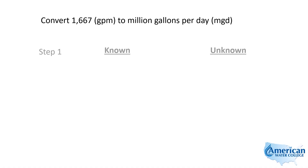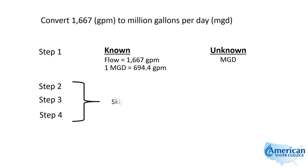There's another way to do this same problem that I'll show you. We have the same information, but I'm going to give you another equivalent: 1 MGD is equivalent to 694.4 gallons per minute. This is not given on any equivalent sheet for most state licensing exams, so you'll want to remember this. It comes from dividing 1 million by the 1,440 minutes in a day — 1,000,000 ÷ 1,440 = 694.4 gallons per minute.